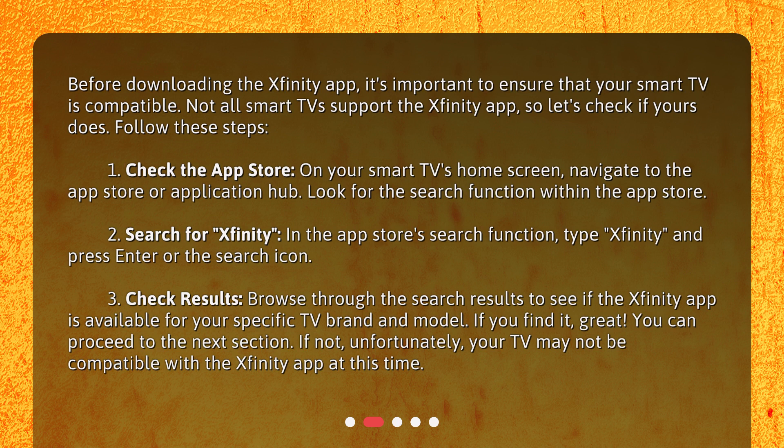Follow these steps. 1. Check the App Store: On your smart TV's home screen, navigate to the App Store or Application Hub and look for the search function. 2. Search for Xfinity: Type Xfinity in the search bar and press Enter or the search icon. 3. Check Results: Browse through the search results to see if the Xfinity app is available for your specific TV brand and model. If you find it, great — you can proceed to the next section.